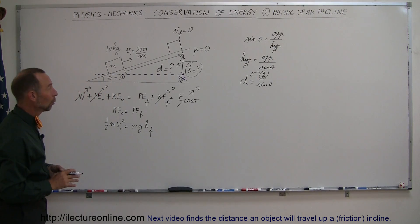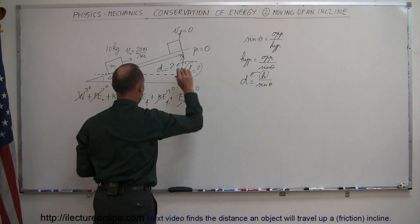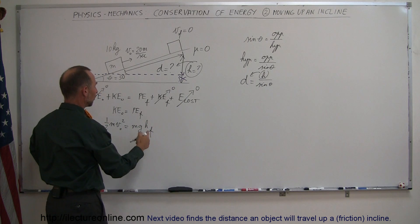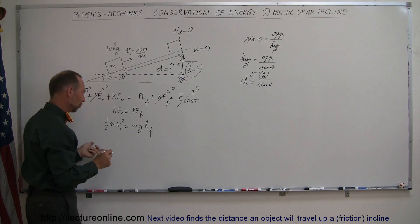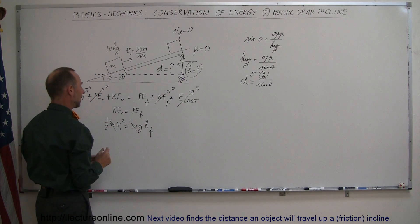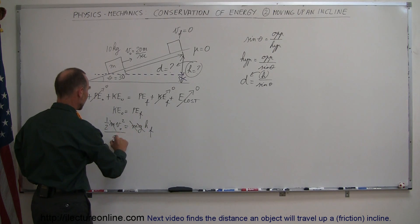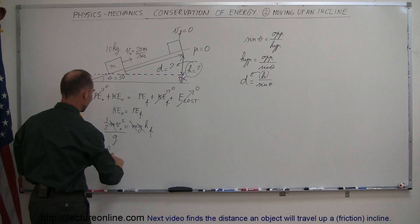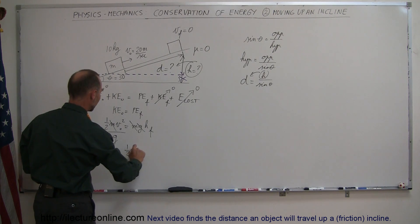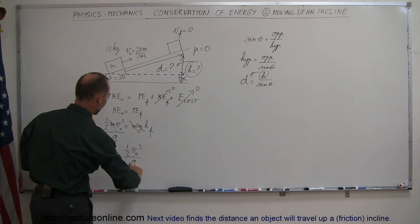So what are we looking for now? We're looking for this increase in height, we're looking for h. That means we want to divide both sides by mg. Now first, I can go ahead and divide both sides by m, and then if I divide both sides by g, this comes over here, and I can write this as h final is equal to one-half the initial velocity squared divided by g.